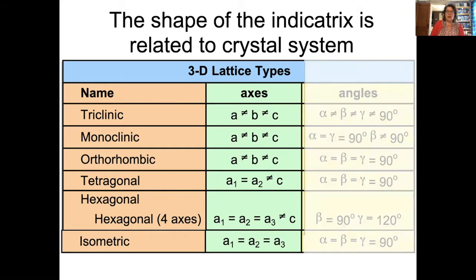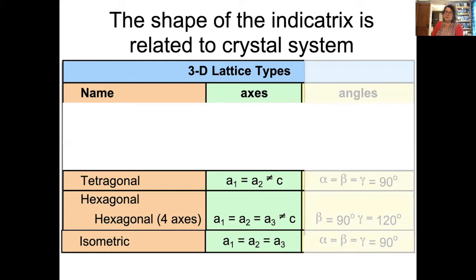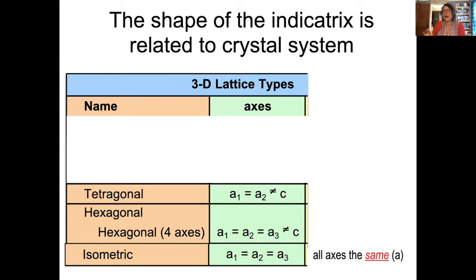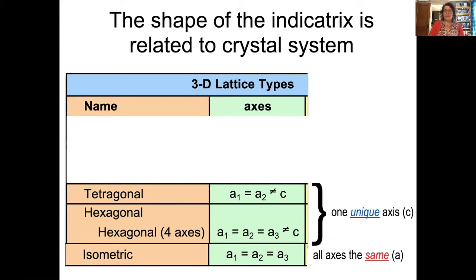When we're talking about the indicatrix, we only need to think about the axes. There are three unique relationships. Today we're going to talk about tetragonal, hexagonal, and isometric minerals. In the isometric system, all axes are the same. In the tetragonal and hexagonal minerals, there is one unique axis.